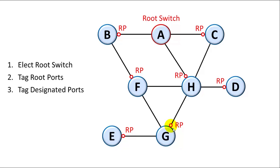Next we're going to tag designated ports. So first, everything facing a root port is a designated port. And then we have to choose one with the lowest ID of the remaining connections.